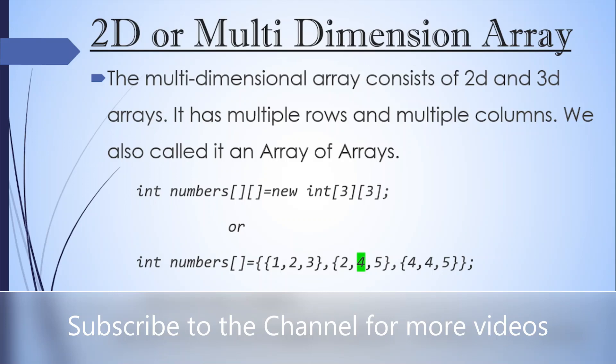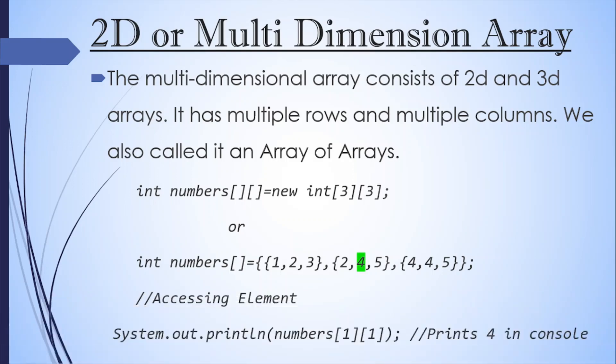Similar to the 1D array, the initialization can also be done during the declaration itself. So here you can see in the numbers, we are storing three different rows which are having three columns inside them. So if we want to access any element, it will be by using the combination of both the row number as well as the column number. So if we want to access the highlighted number, then we can do that using the row number one as well as the column number one. So it will print four on the console.